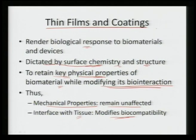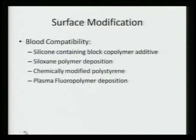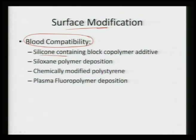Thin films and coatings can render enhanced cytocompatibility, modifying the biocompatibility while maintaining the mechanical properties of the device. Certain surface modifications are required — for example, blood compatibility. When we require blood compatibility with the inserted device, we can utilize silicon-containing block copolymer additives, siloxane polymer deposition, chemically modified polystyrene, or plasma fluoropolymer deposition to enhance blood compatibility with the device material.